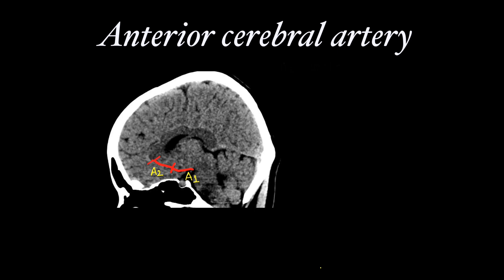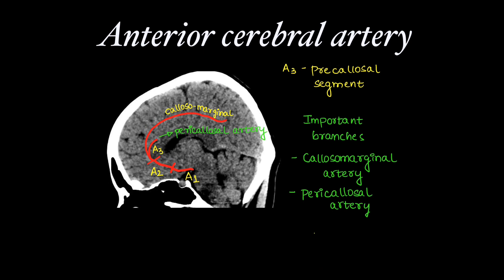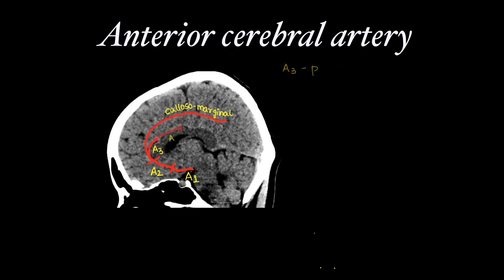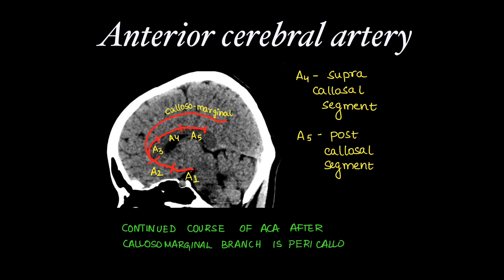Next is the A3 segment, which lies in front of the corpus callosum and hence is called the pre-callosal segment. A3 gives rise to the callosomarginal artery and then continues as the pericallosal artery. The continued part of ACA is then divided into A4, the supra-callosal segment, and A5, the post-callosal segment. Remember, the continued course of ACA after the callosomarginal branch is called the pericallosal artery.